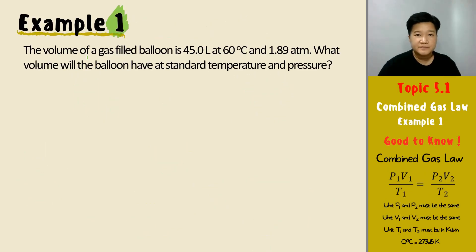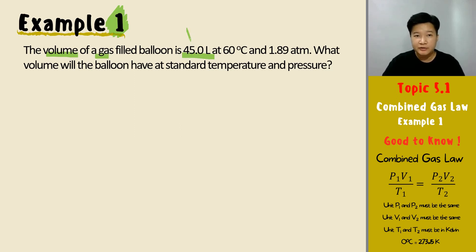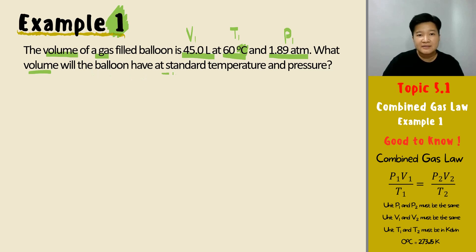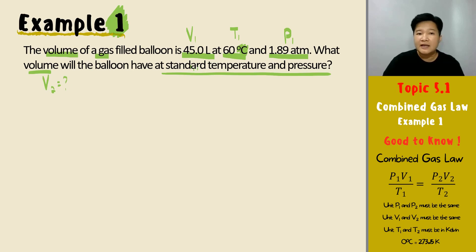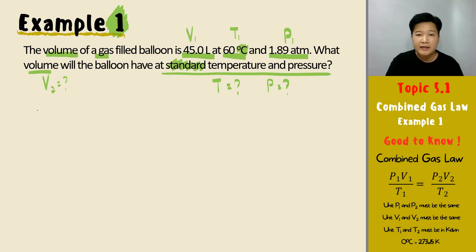First example: the volume of a gas-filled balloon is 45 liters (V1) at a temperature of 60 degrees Celsius (T1) and 1.89 atm (P1). What volume will the balloon have at standard temperature and pressure? We are looking for V2. Recall that standard temperature and pressure means 0 degrees Celsius and 1 atm.